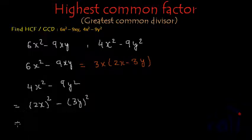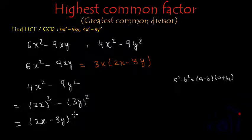This is now in the form of a square minus b square and what is a square minus b square? a square minus b square is a minus b multiplied by a plus b. So, it can be written as 2x minus 3y multiplied by 2x plus 3y.